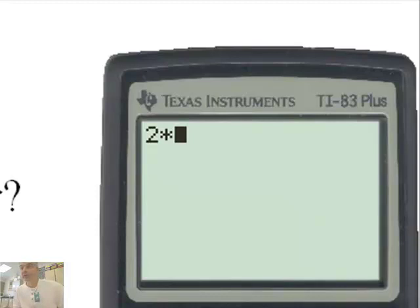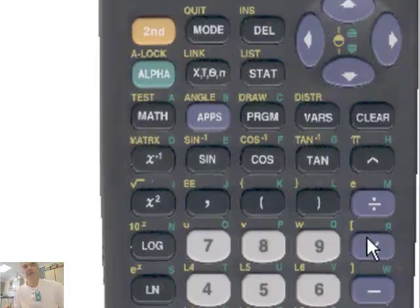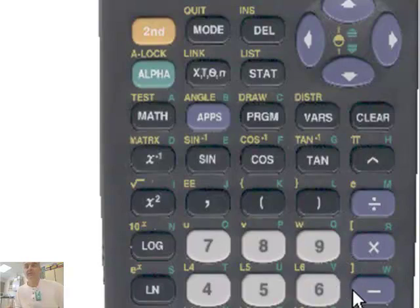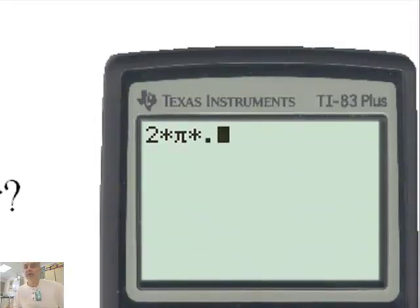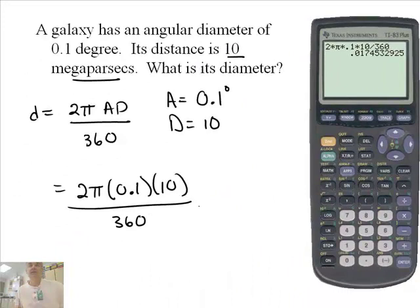So I'm going to say, on the calculator, 2 times π. Now, there's a button over here, that's the π button. So you have 2 times π, times 0.1 times 10, divided by 360.